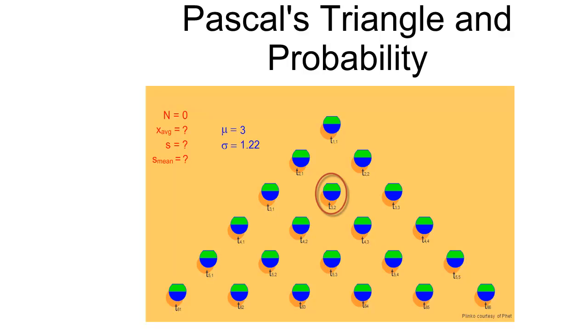In this example, we're just going to be flipping a fair coin, and so the probability of getting a head and a tail are both equal. Let's consider this peg. Now I've labeled it term 3, 2, meaning it's in row 3 and it's in column 2.